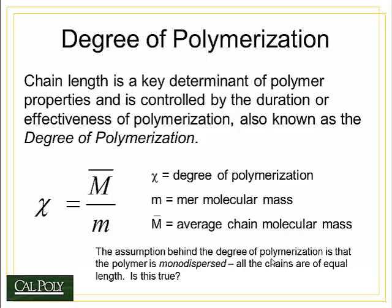When making polymer chains, one of the most important considerations is how long the chains are. The measurement of chain length is given by the degree of polymerization, which is the average number of mer units in the chain. The higher the degree of polymerization, the longer the chain. We calculate it by taking the average chain molecular mass, m-bar, and dividing it by the mer molecular mass, lowercase m.